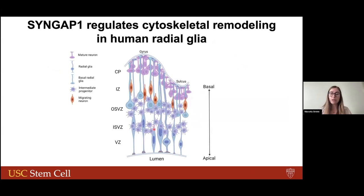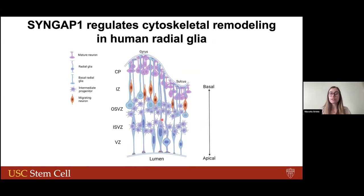Cytoskeletal remodeling in radial glia cells is really important in the context of the developing cortex. Here you see a schematic of radial glia cells extending two different processes: one apical process towards the lumen of the ventricle, where tight junction proteins like TJP1 maintain the integrity of the ventricular wall, and a basal cytoskeletal process that is really important for neurons, once generated, to migrate to the proper layer of the cortex.